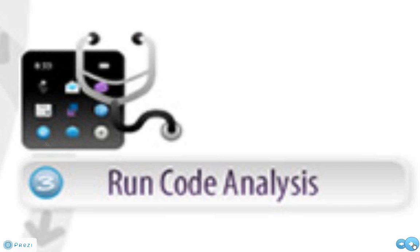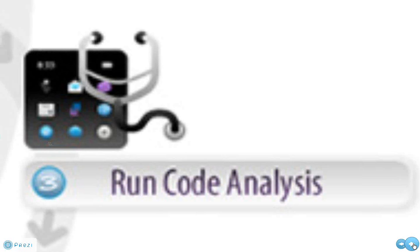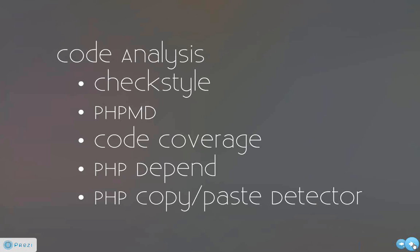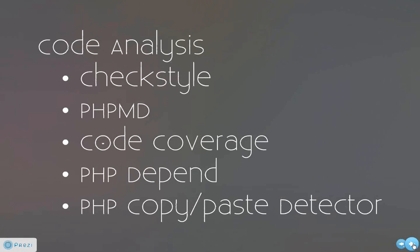This is running the code analysis. What is running code analysis? It is like checking, suppose, a developer has not followed coding standards, or is doing something wrong with the code — writing wrong for loops, etc. There are ready tools available to do all these checks. These are some code analysis tools: Check Style, PHP MD, Code Coverage, PHP Depend, and PHP Code Paste Detector.